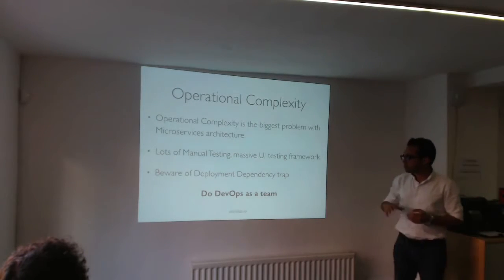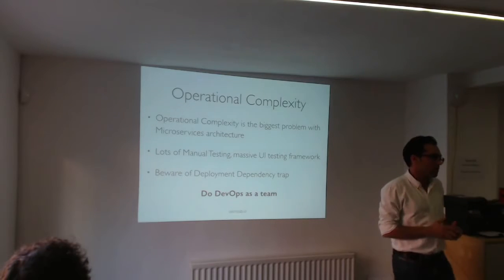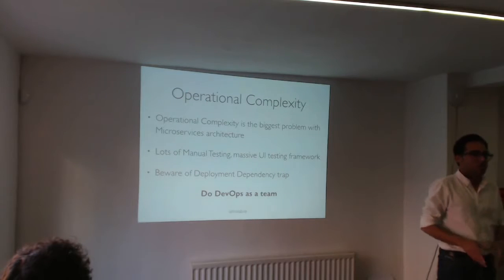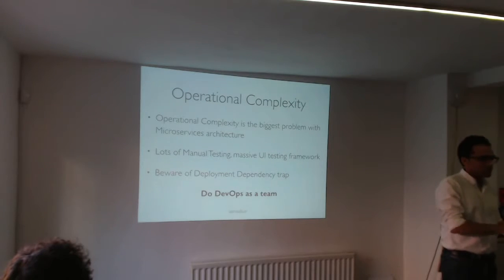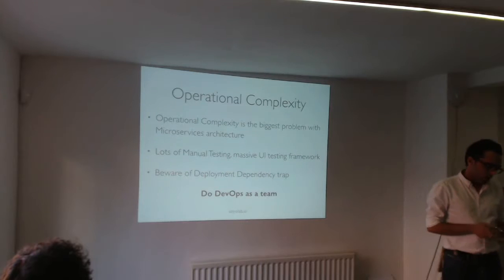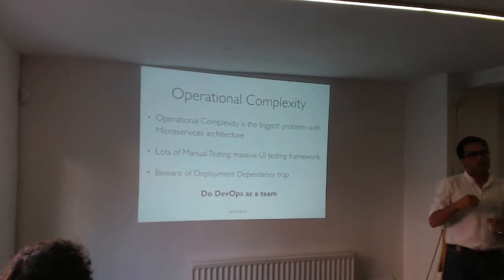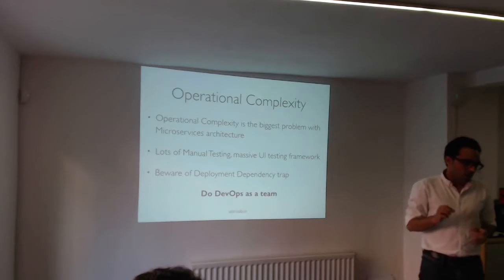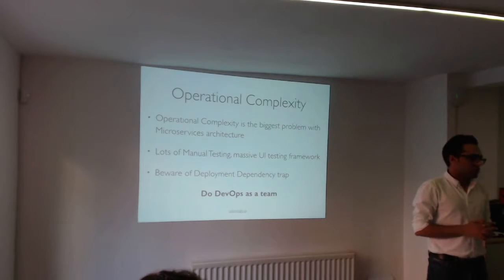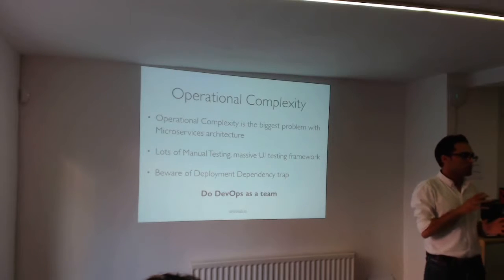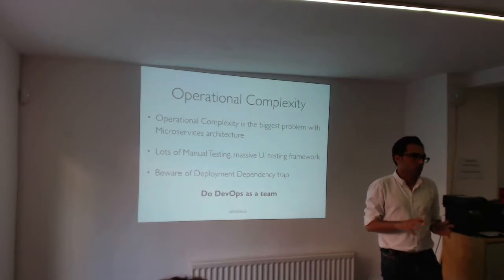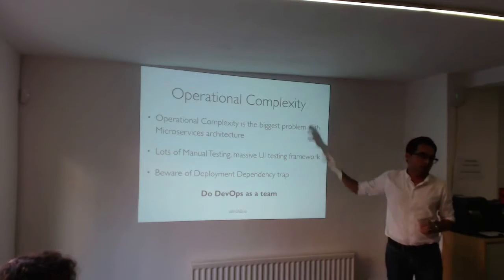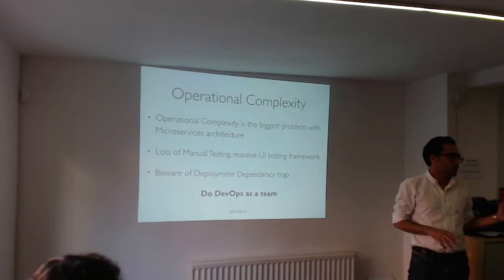One way to manage this is to do DevOps as a team — to embrace DevOps culture and not have a separate operational team and a software development team. My advice is to have DevOps as part of your practices, and all of your developers should do DevOps. Another thing is to use cloud if you can. The projects that are using cloud are much more successful than the ones using on-premises infrastructure, simply because there are a lot of tooling around managing complexity for things like AWS or Azure.